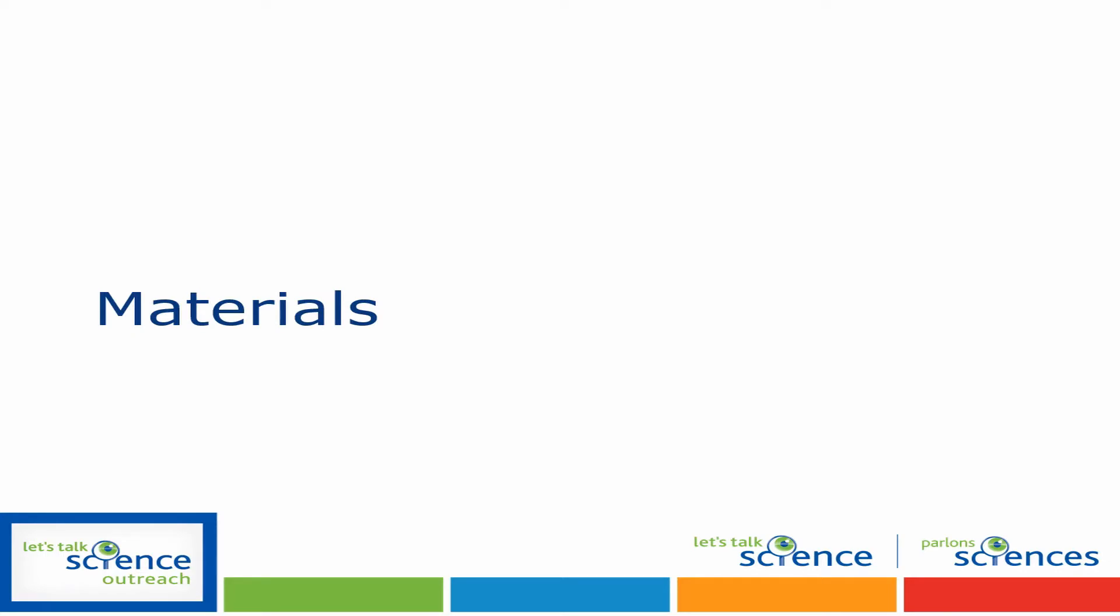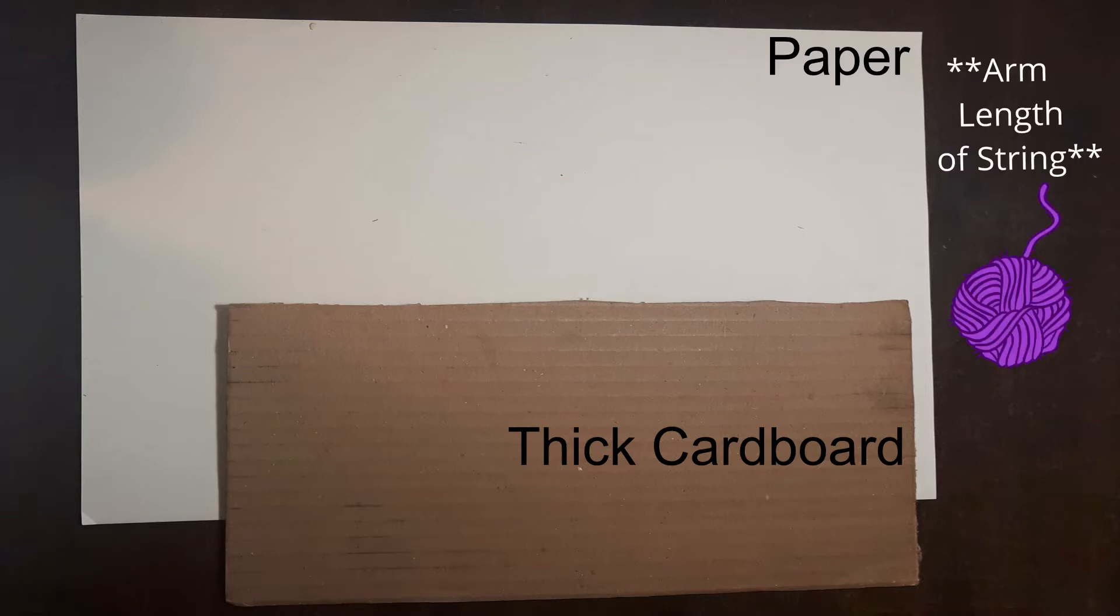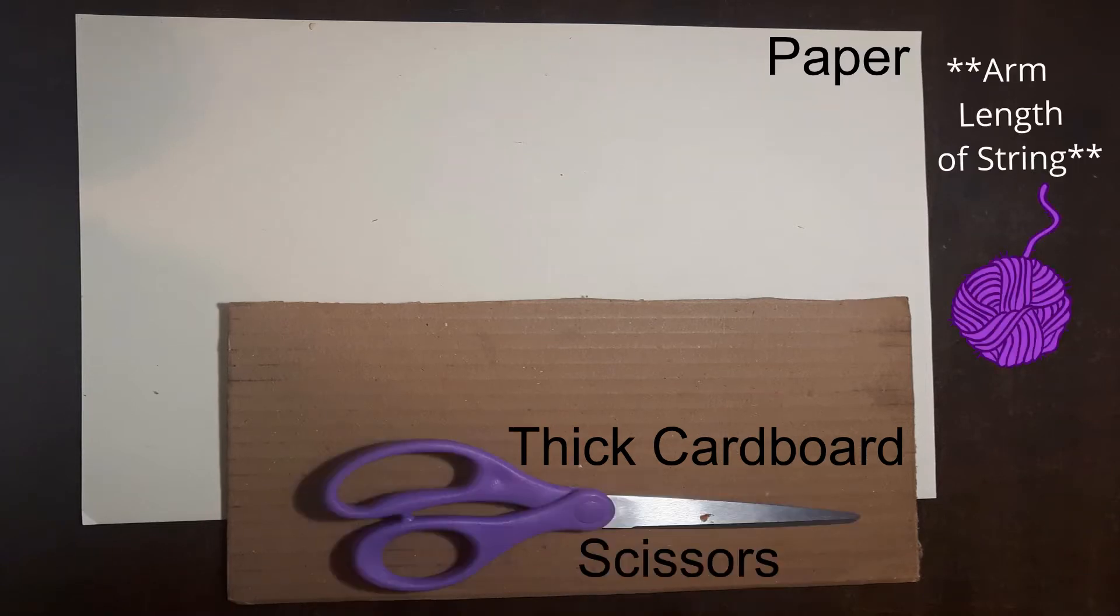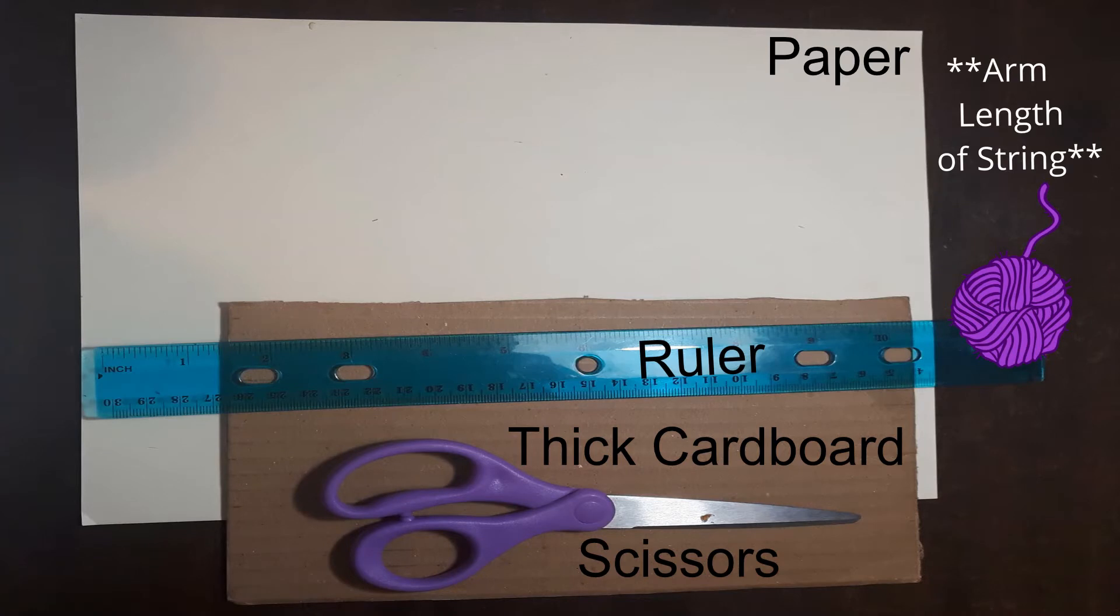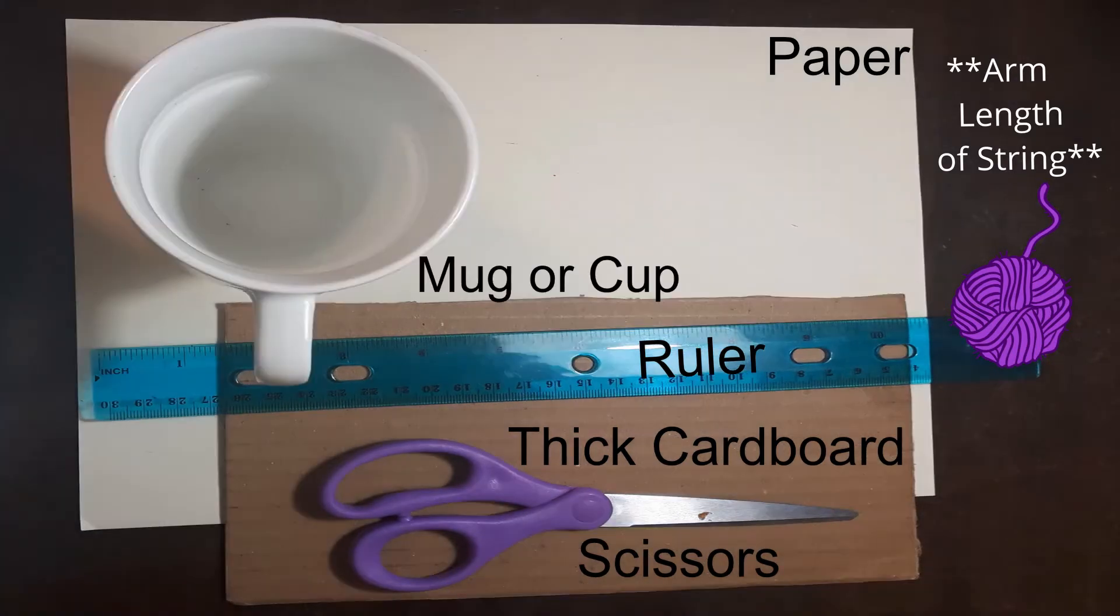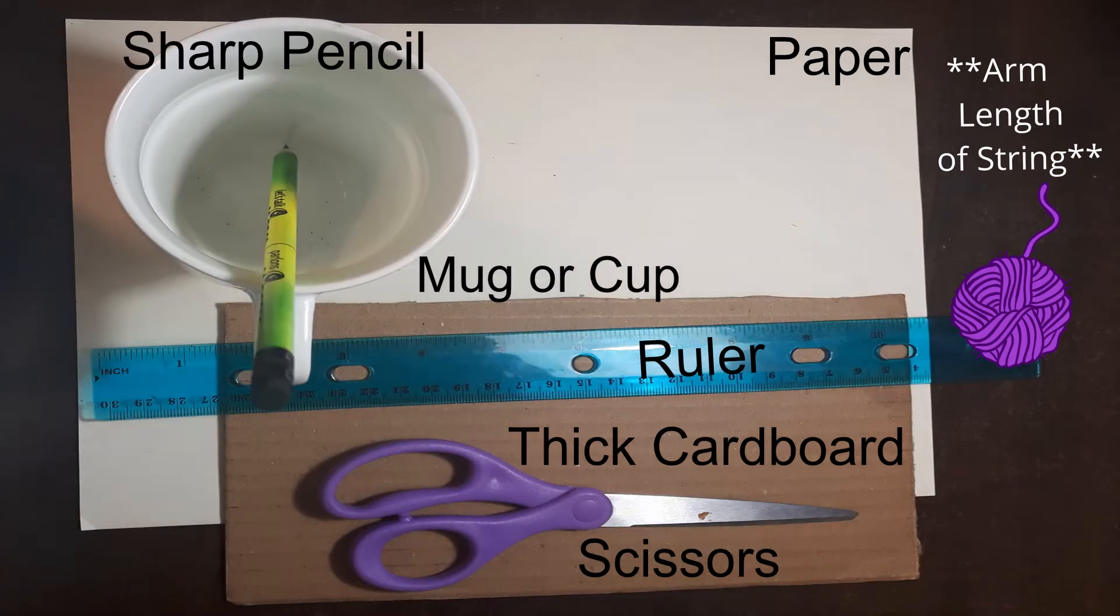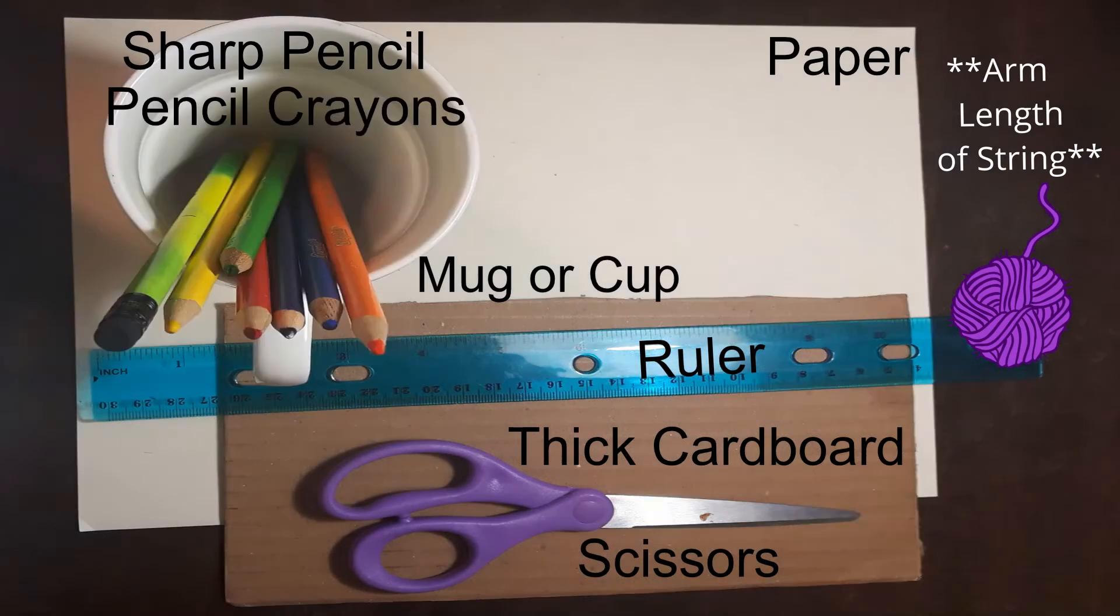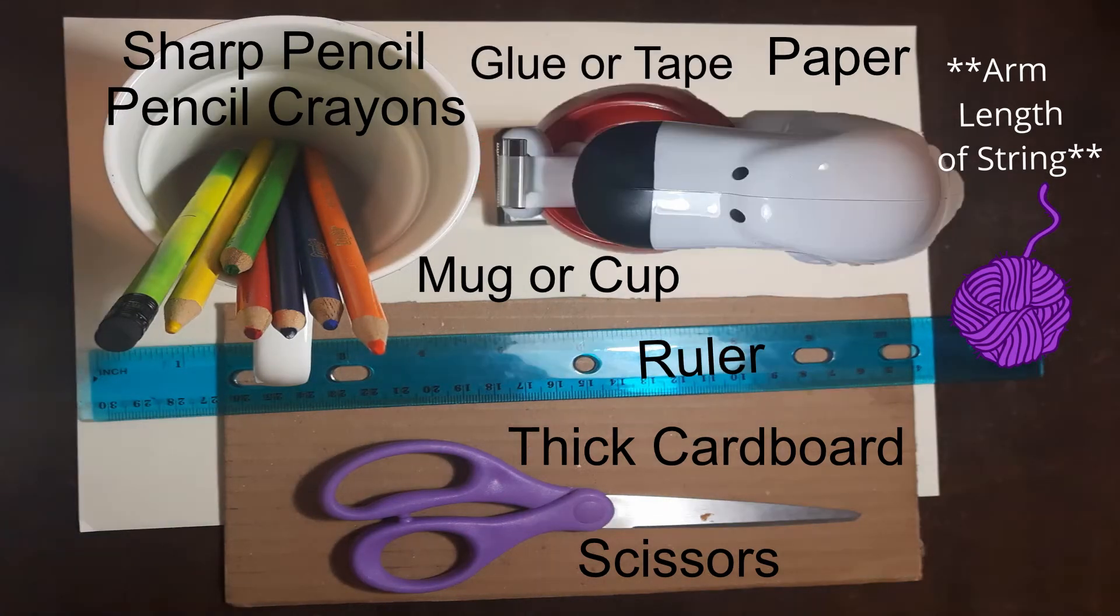So here are some of the materials that you'll need for today's experiment. You'll need a sheet of paper, a piece of cardboard, a pair of scissors, a ruler, or some sort of straight edge, a mug or a cup. And you want to make sure that your piece of paper and your cardboard are big enough for you to trace your mug on. You'll want a pencil that's sharpened and an eraser, some pencil crayons, preferably rainbow colored pencil crayons, some school glue, or some tape.